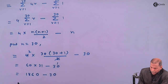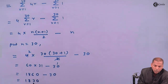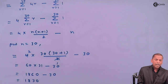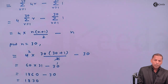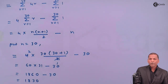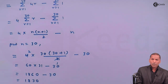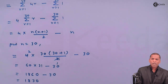So that gives the answer 1830. Therefore, 60² minus 59² plus 58² minus 57² plus 56² minus 55² plus going on up to the last term 2² minus 1² equals 1830. That is 1830. So this is the required solution for the given problem. Thank you.